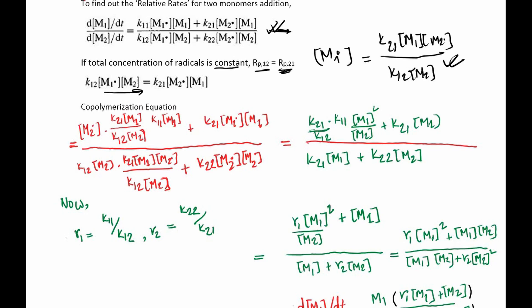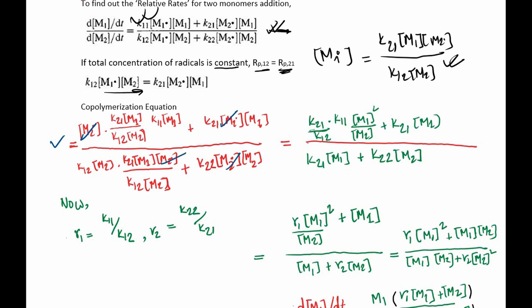Now we are going to put this value into the equation here. If you put this value in, we get this particular result. All you have to see is that we have our monomer radical 2 concentration appearing in the numerator and denominator, so we can eliminate them.